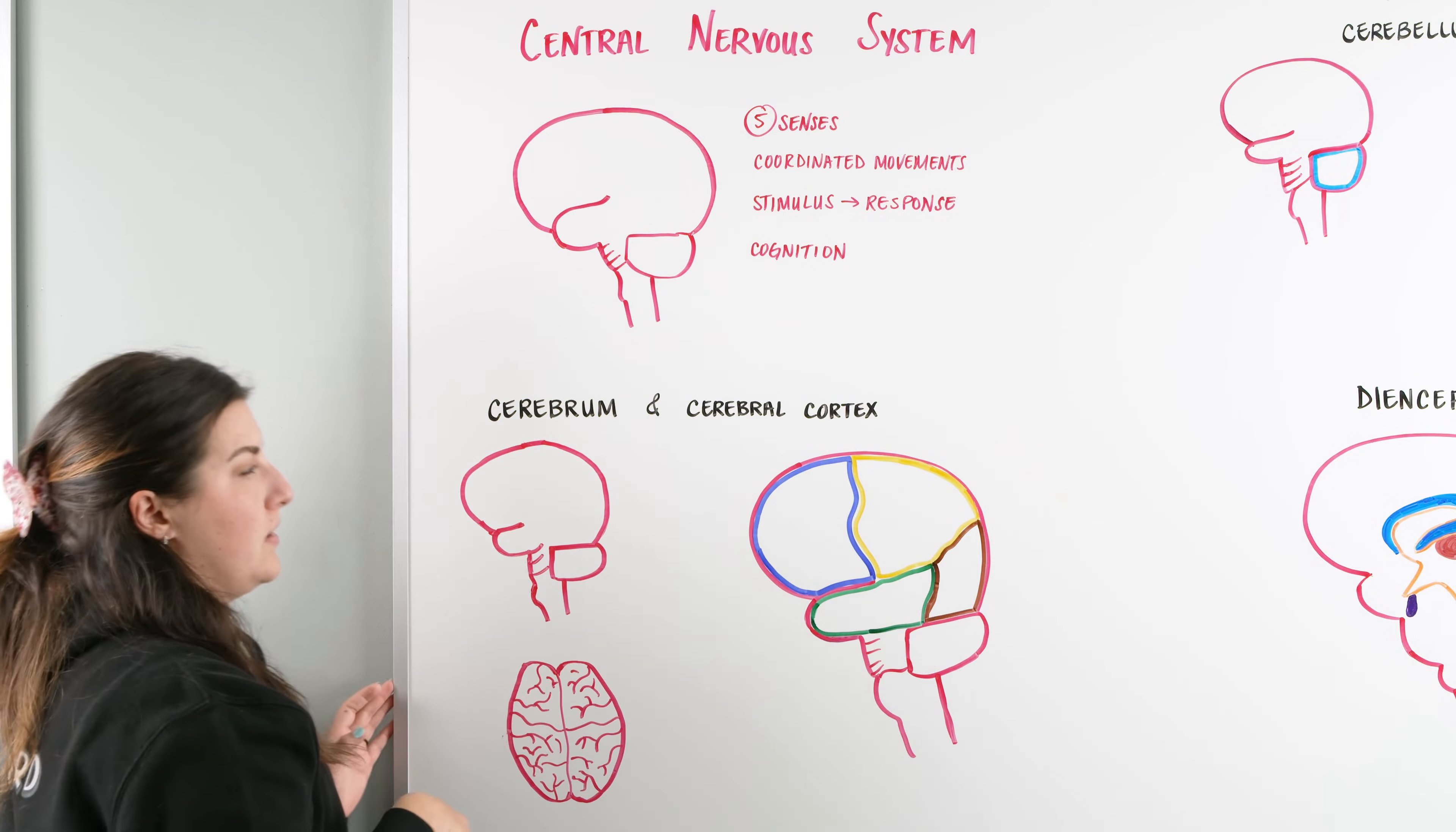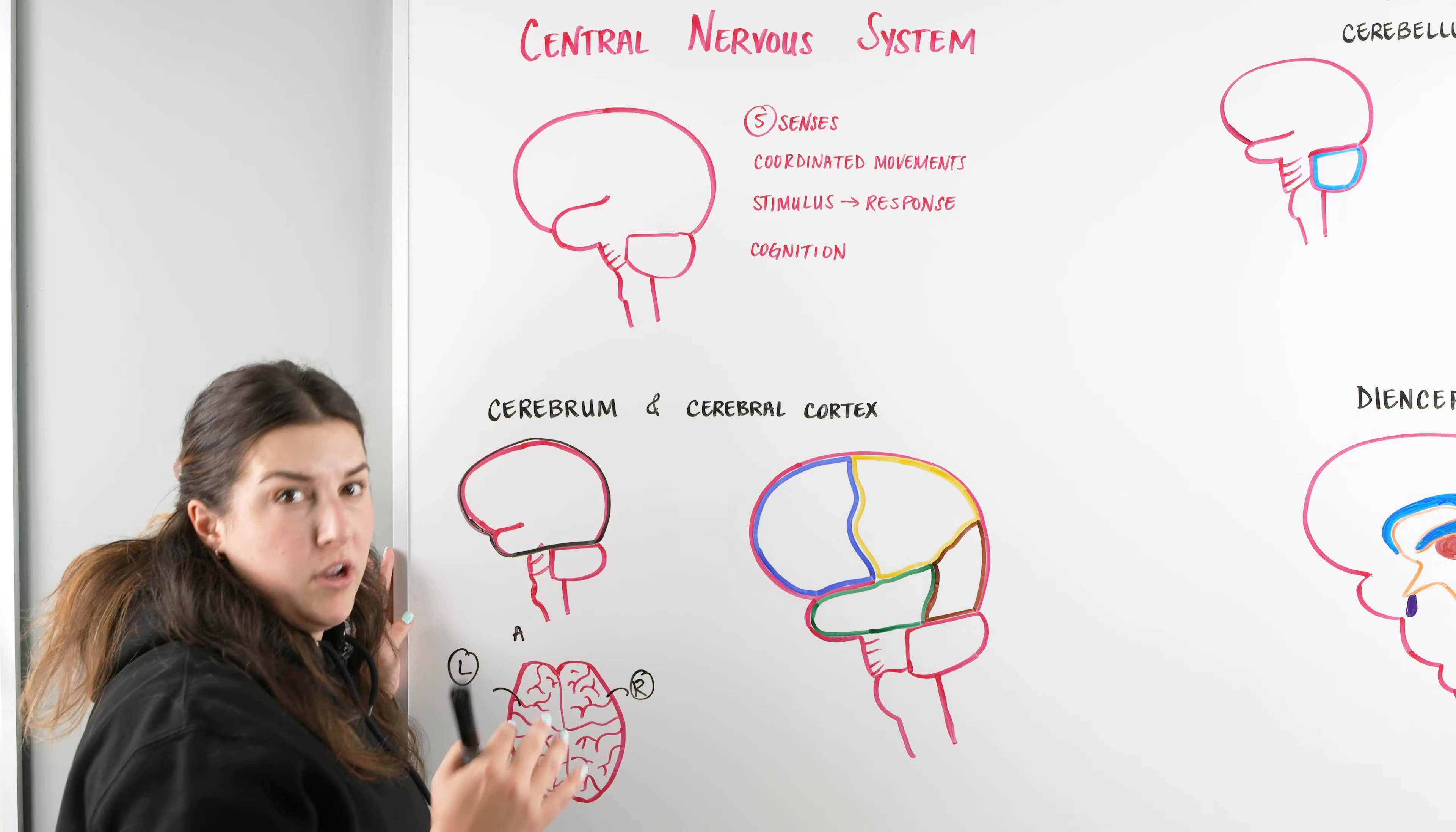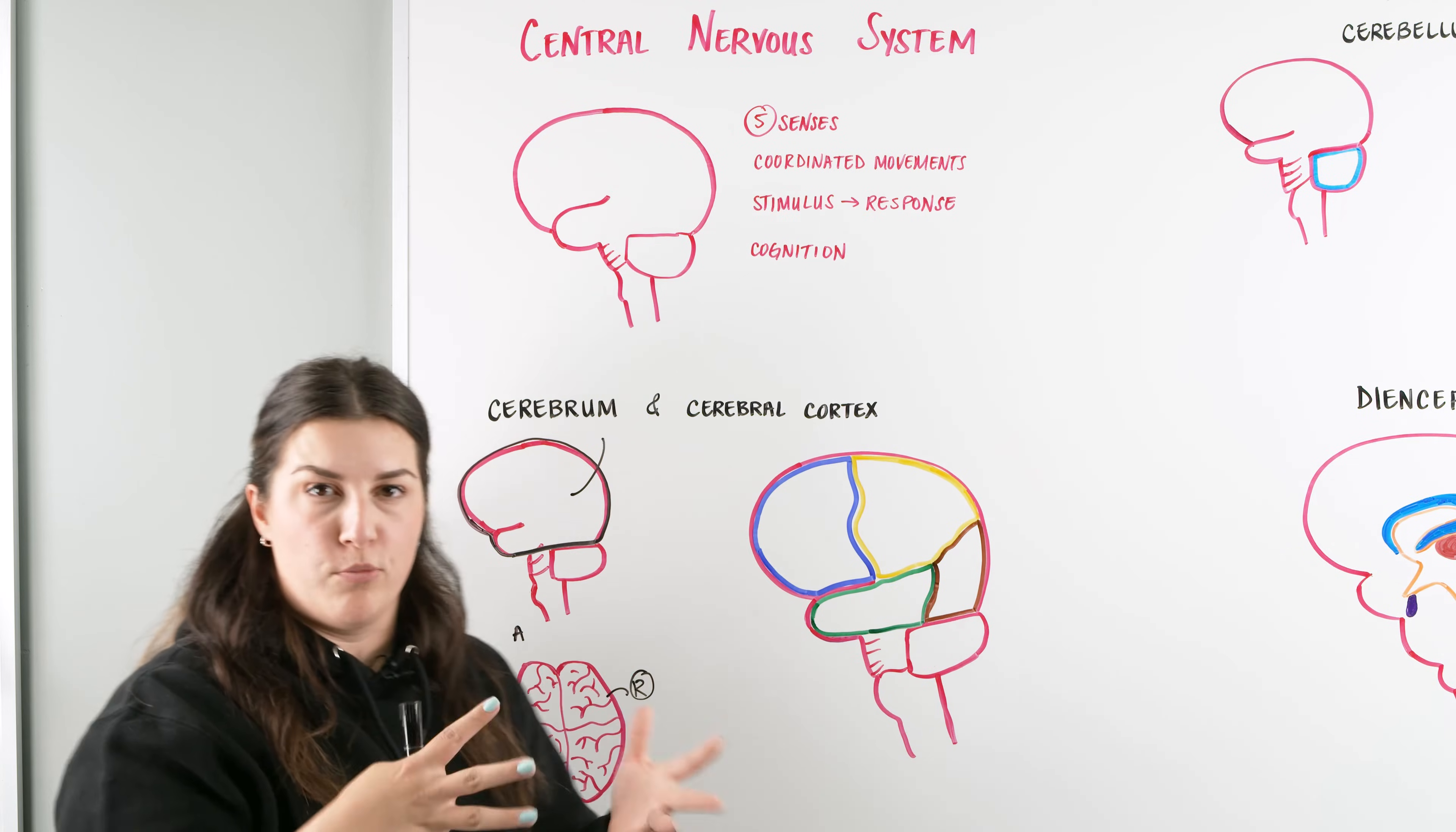First, starting with the cerebrum and the cerebral cortex. When we're looking at the cerebrum, we're focusing on this biggest part of the brain, this whole portion up top here. The cerebrum is broken down into the left hemisphere and the right hemisphere. It's further broken down into our gray matter and our white matter. Our gray matter is the area around the outside where we can break into our cerebral cortex, which is broken into four lobes.